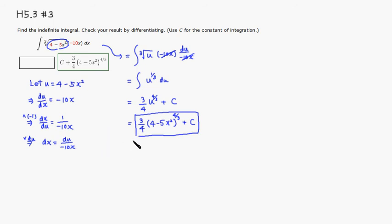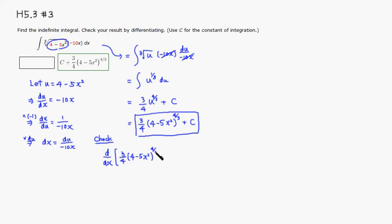The second part is to verify this is the right solution by taking the derivative and checking we get the original integrand back. We're taking the derivative of three quarters times (4 minus 5x squared) to the four-thirds power, plus c.